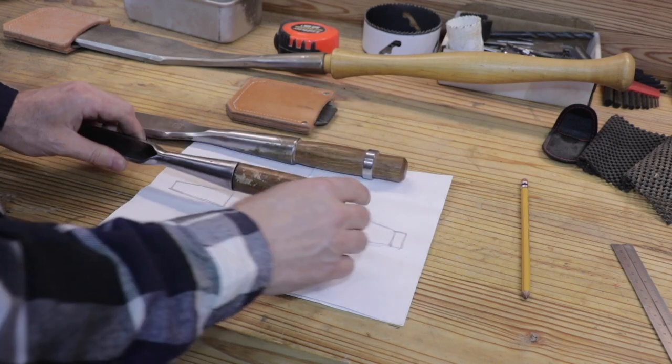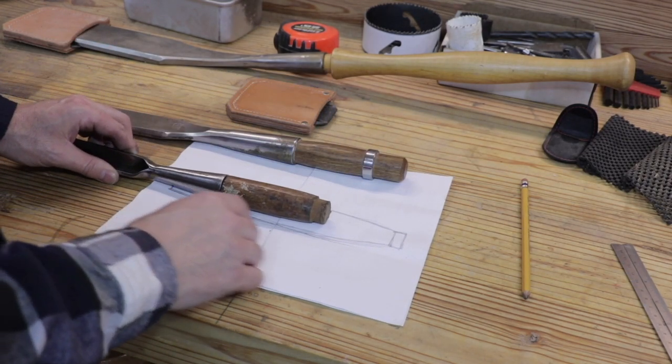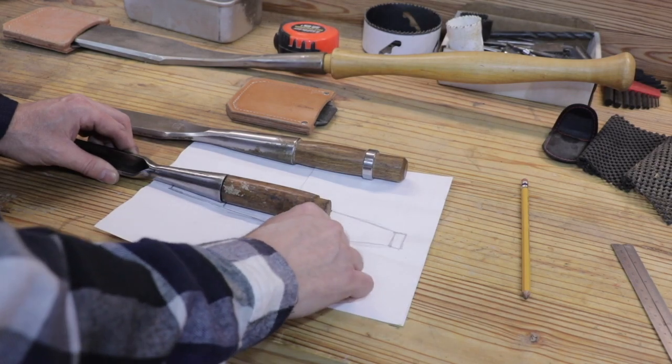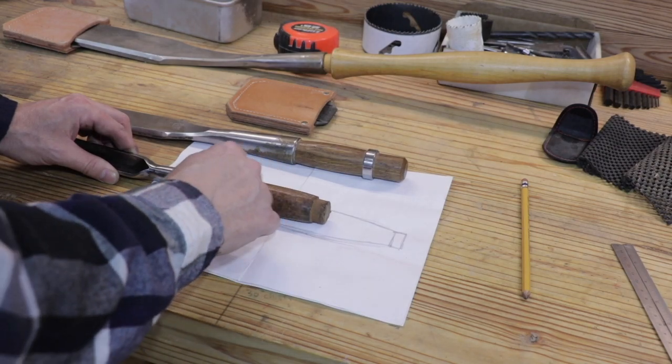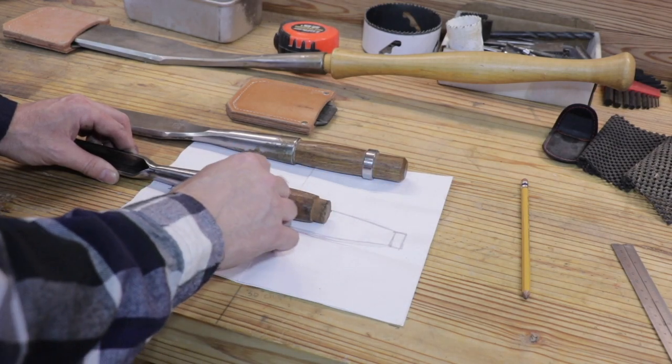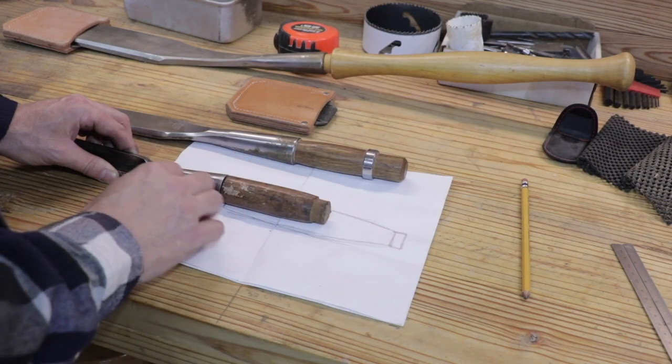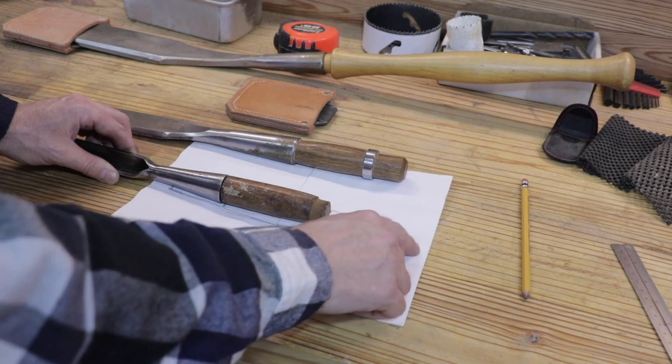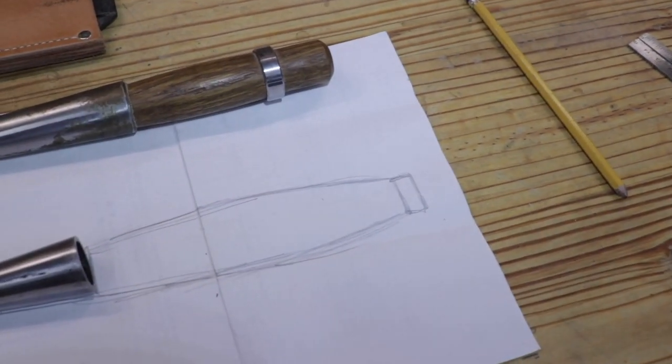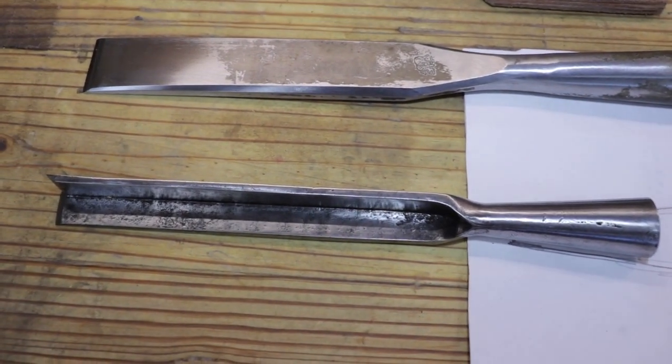So this is the old handle, and here is the marking for where the socket will be. And we're going to make it about a third longer than what it is now, probably four or five inches. And I kind of want the chisel to have a gradual taper from front to back, and then we will also put the ring on the end. So that kind of shows you the size of the handle that I'm planning.